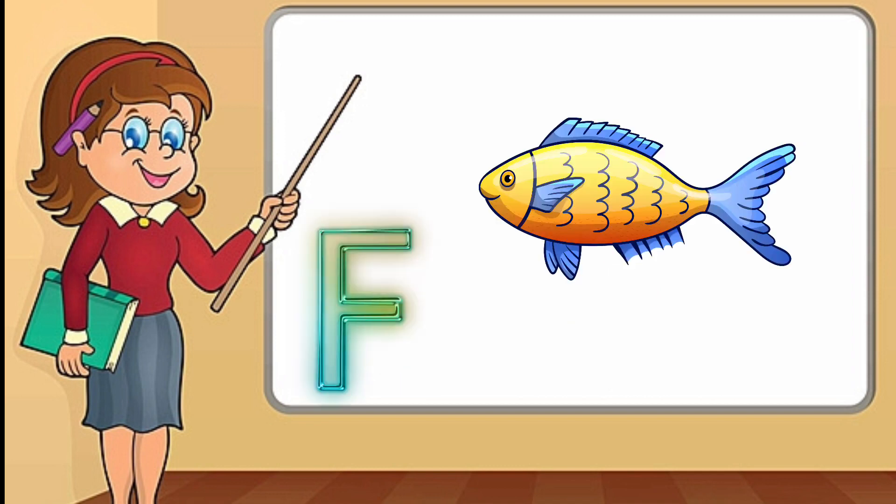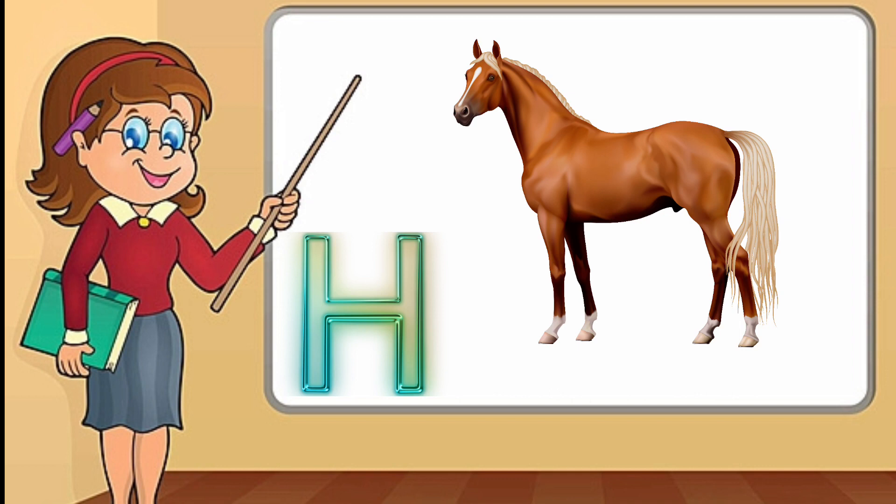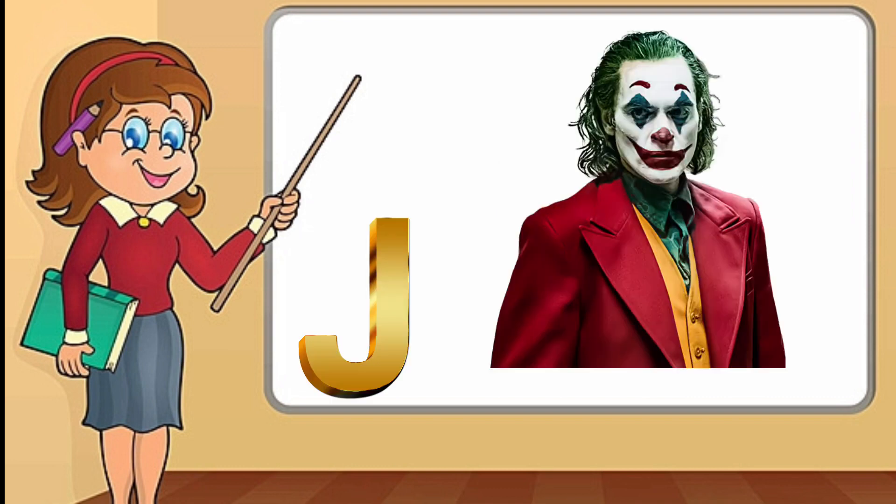F. F for fish. G. G for grapes. H. H for horse. I. I for ice cream. J. J for joker.